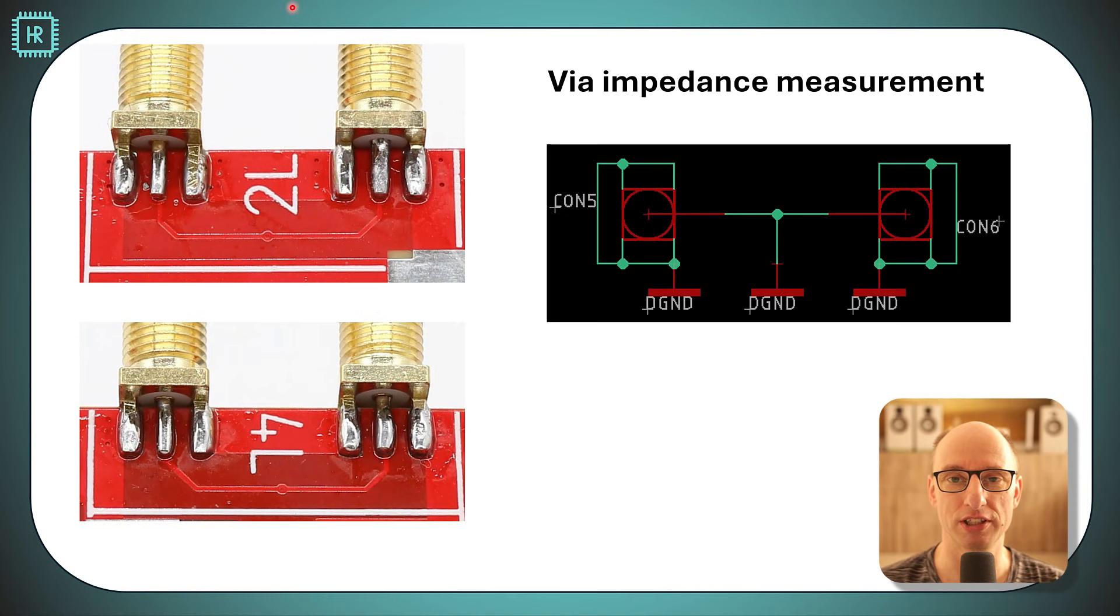Now let's do a measurement on VIA impedance. I prepared two test circuits for it. Here you see the schematic, it's basically two SMA connectors with a wire in between and that wire is grounded in the middle.